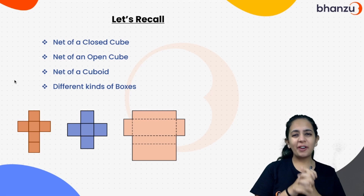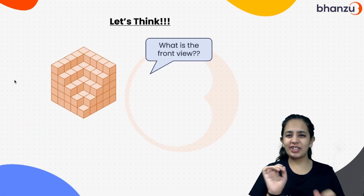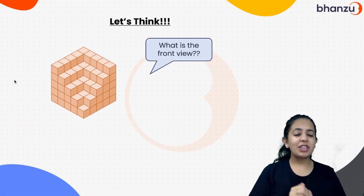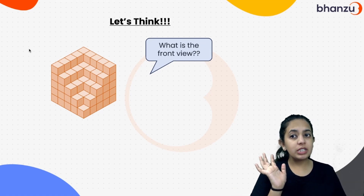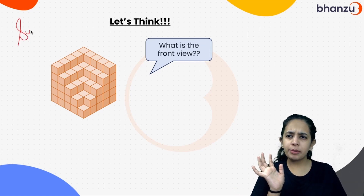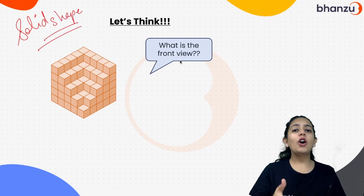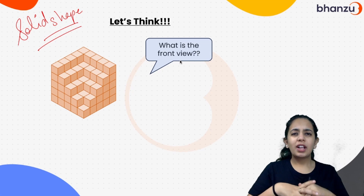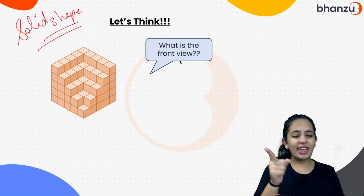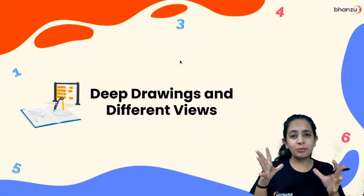Now let's start today's session with a wonderful question. Which is the front view for this solid shape? This is also a solid shape — you can touch this kind of shape as well. You might have guessed the topic of the day: we are going to learn about deep drawings and different types of views.